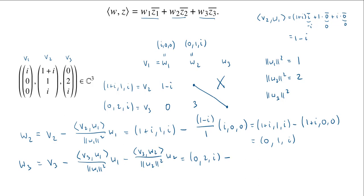V3 is 0, 2, i minus—now the inner product of V3 and W1 is 0, so I don't even get this middle term. That's wonderful, it's just 0. Then V3 with W2 has inner product 3. So I have 3 over 2 times W2, which is 0, 1, i. We have 0, 2, i minus 3/2 times 0 is 0, then 3/2 and 3/2 i.